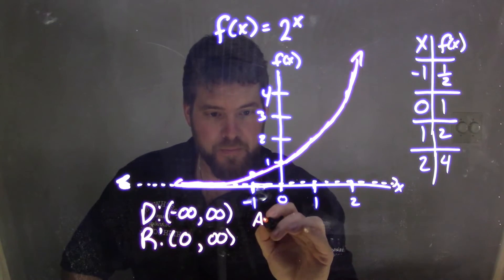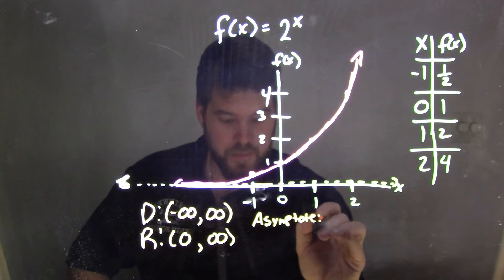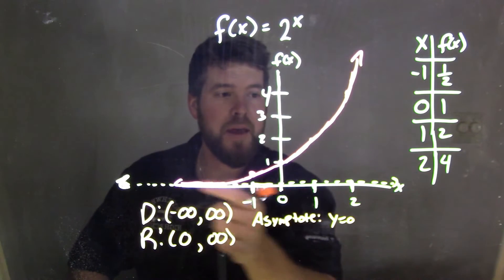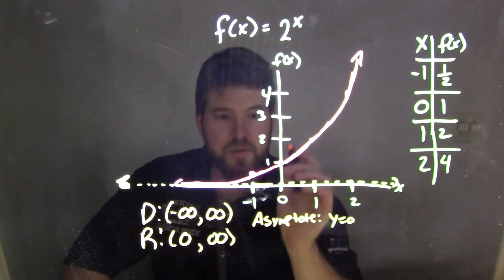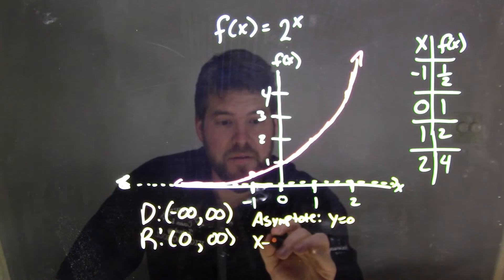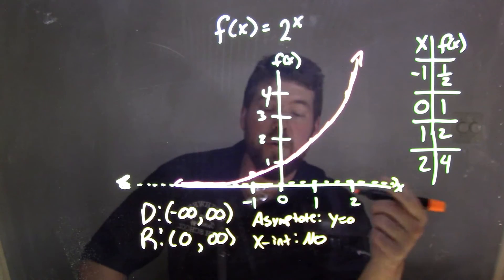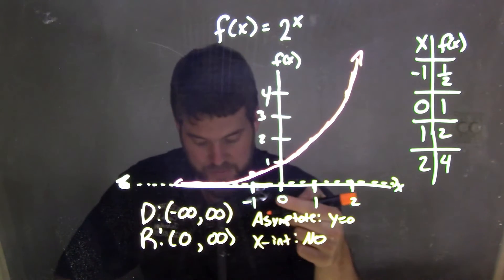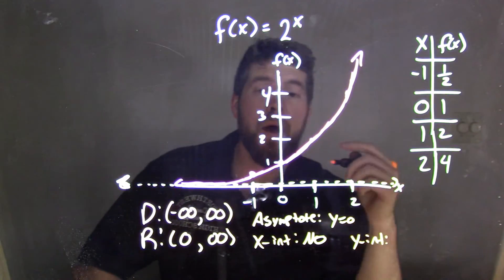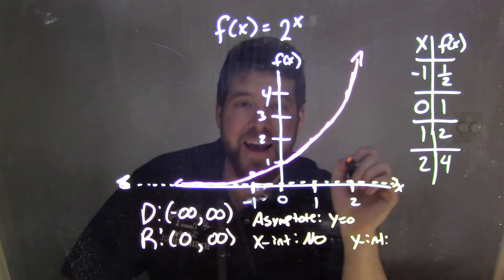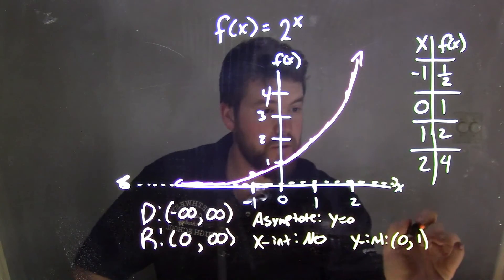We have an asymptote at y equals 0 on the x-axis. I know we drew it a little bit above to differentiate, but it is on the x-axis. Do we have an x-intercept? And the answer is no. There is no x-intercept here. It doesn't cross the x-axis because of the asymptote. But we do have a y-intercept. And that y-intercept happens right here at y equals 1, or x equals 0. So that point is 0, 1.